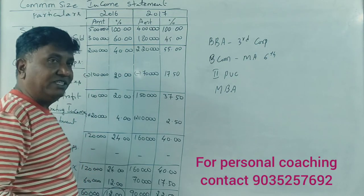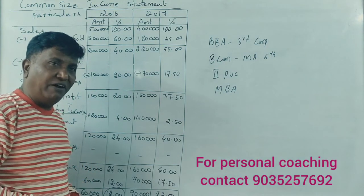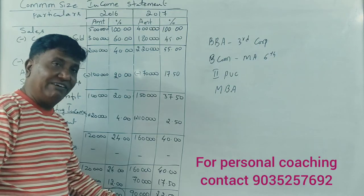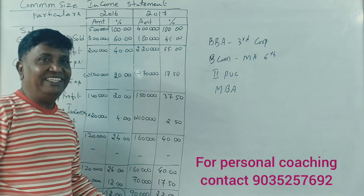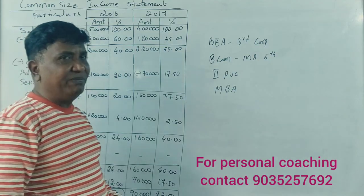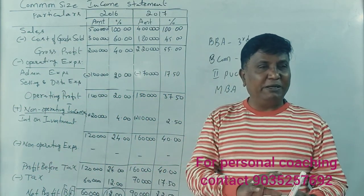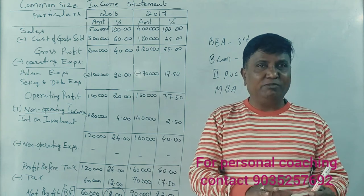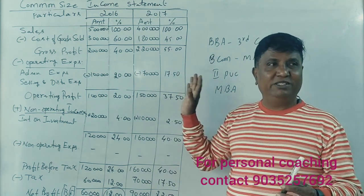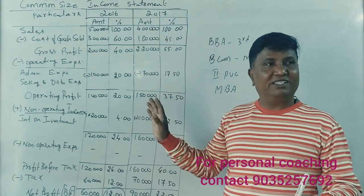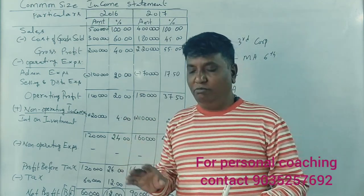In 2016, we have 12% net profit on sales, and in 2017 we have 22.5% net profit on sales. If you know how to interpret and analyze these figures, this is what a common size income statement tells us. Thank you.